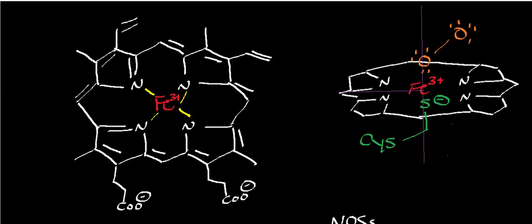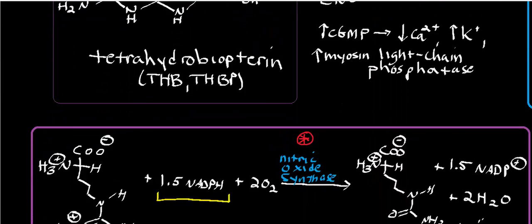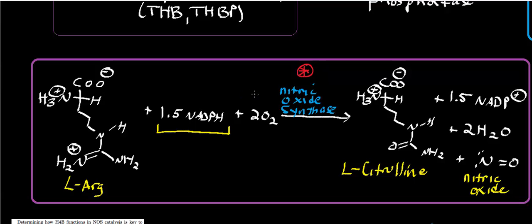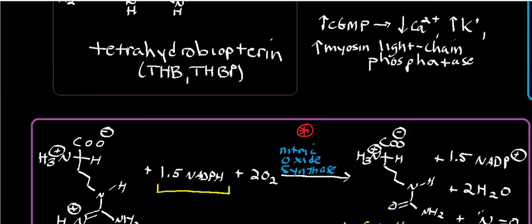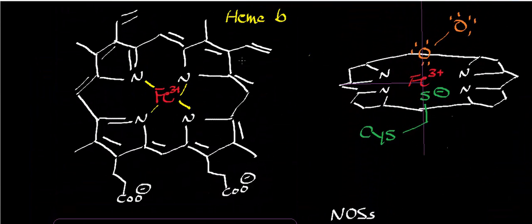This enzyme has heme B — iron protoporphyrin 9. The heme B is going to chelate ferric iron (Fe3+) in the center of the porphyrin ring. The iron is going to be what activates the molecular oxygen. Notice that one of the substrates is two molecular oxygens, and the heme is going to play a role in activating those molecules.